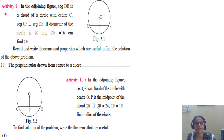Let us start with the activity. In the following figure 3.1, DE is a chord of a circle with center C. CF is perpendicular to DE. Diameter is 20 and DE is 16. Find CF.